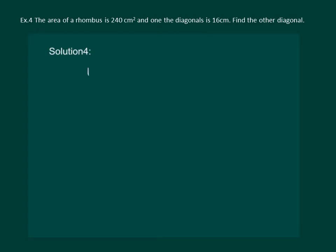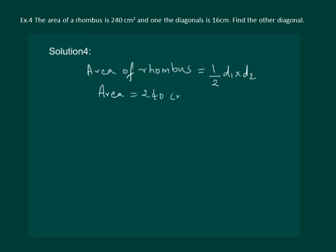We know that area of a rhombus is equal to half × d1 × d2, where d1 and d2 are the lengths of the diagonals. In the question we are given that area is equal to 240 cm², one of the diagonals d1 is 16 cm, and we have to find out the other diagonal, that is d2.